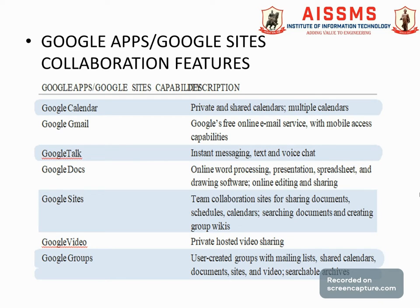There are different Google Apps collaboration features including Google Calendar for sharing private and multiple calendars, Gmail as a free online service accessible on mobile, Google Talk for instant messaging, text, and voice chat, and Google Video for hosting and sharing video content. These are the different tools in the internet-based collaboration environment that allow users to share data.